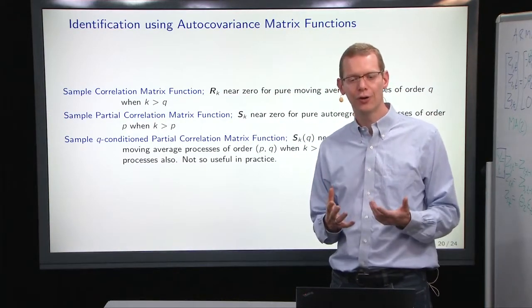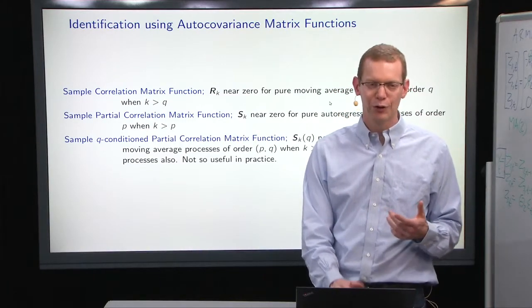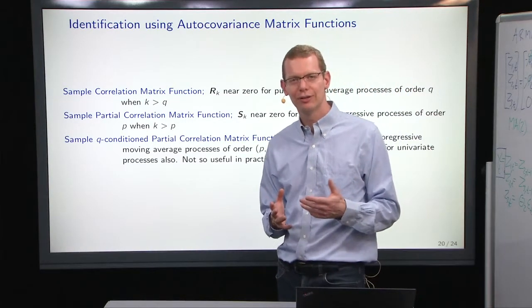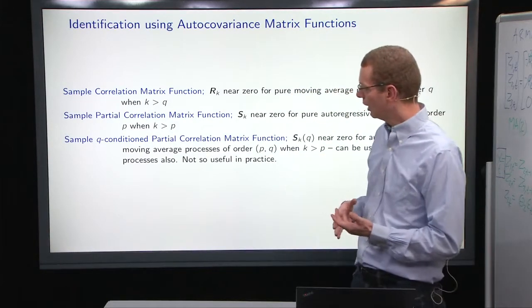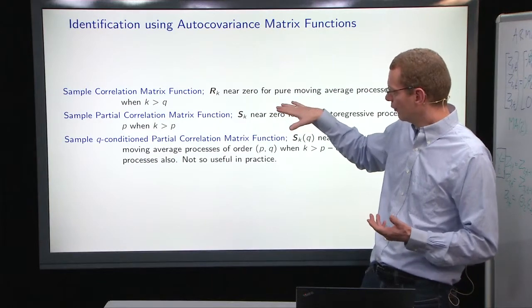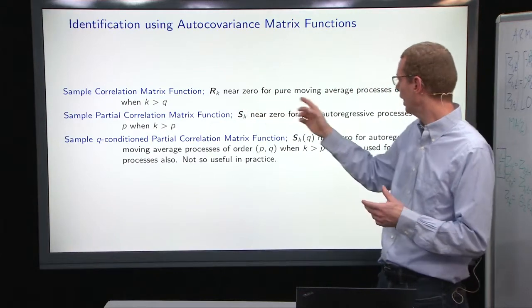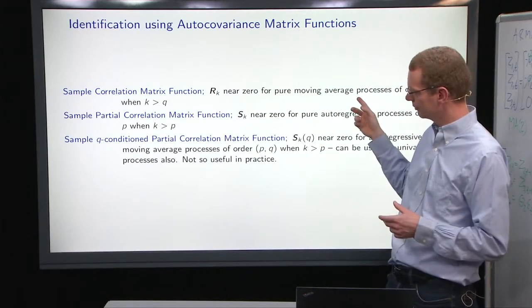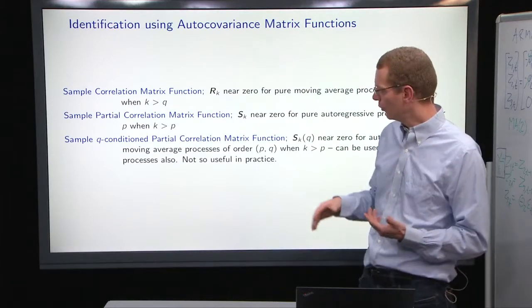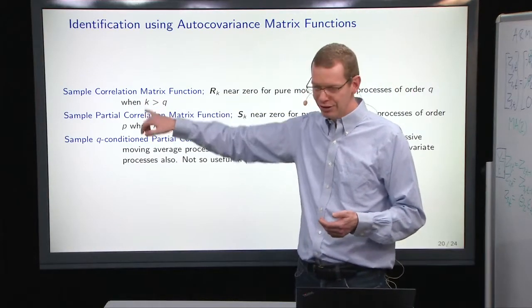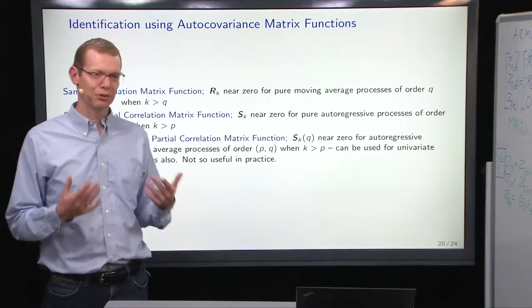How do you identify these models? First of all, everything is very closely related to what we did for the ARMA models. If you look at the sample correlation matrix function, if you have a pure moving average process, then those coefficients are nearly zero when the lag k is greater than the order of the process. That's equivalent to what was in the univariate case.